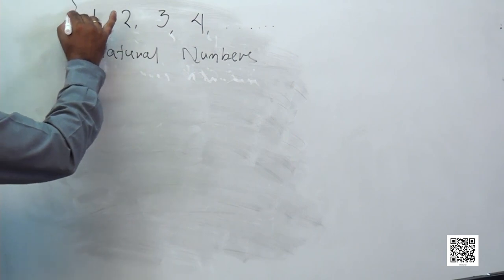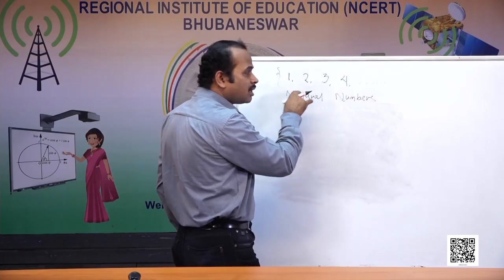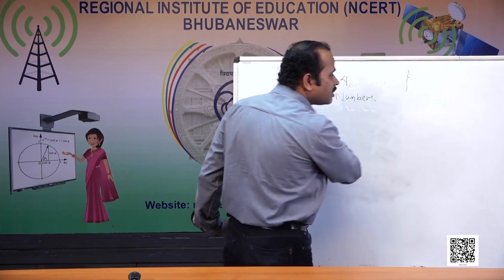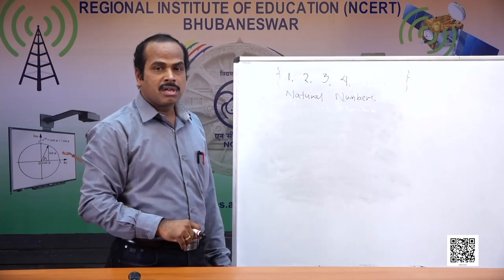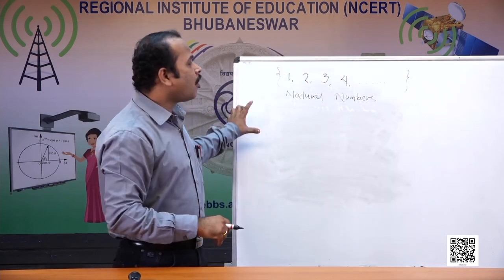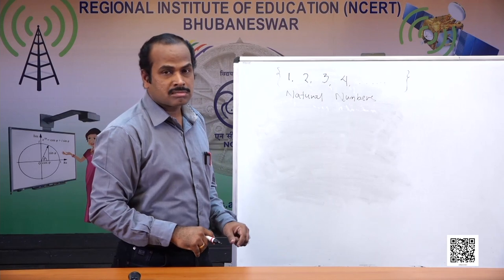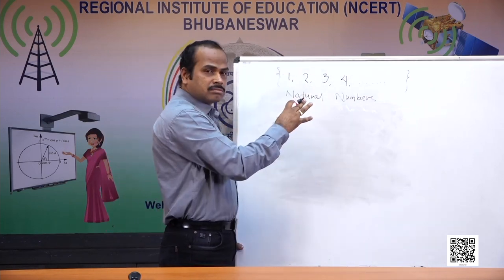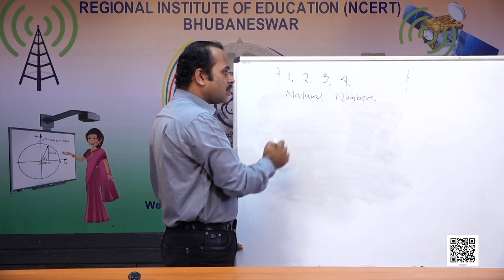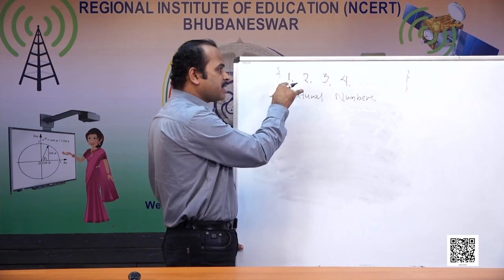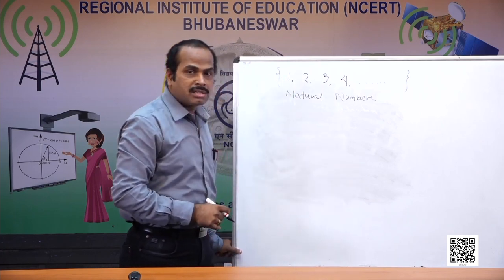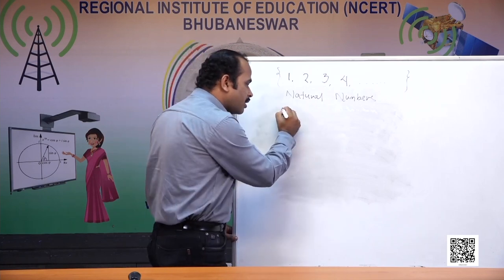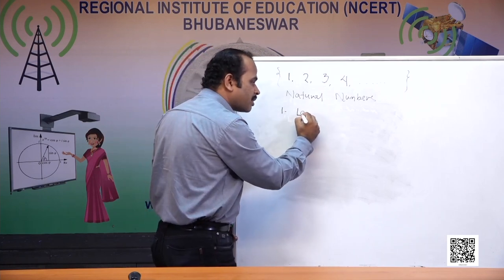Natural numbers start with one and move endlessly — they are infinite. The least natural number is one, since the numbers start from one. So one is called the least natural number.